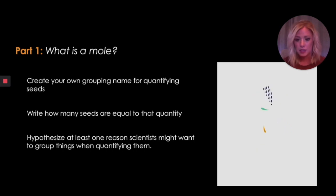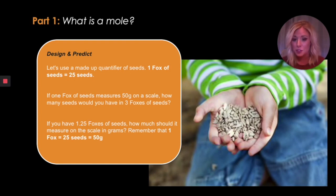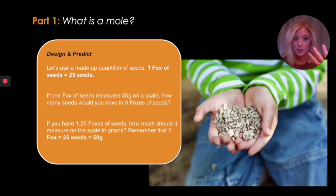I also want you to hypothesize at least one reason scientists might want to group things when they quantify them. Here's my example: my last name is Fox, so I said one fox of seeds is equal to 25 seeds, and one fox weighs 50 grams on a scale. How many seeds would you have in three foxes? I know 25 seeds equals one fox, so three foxes would be 25 times 3, giving us 75 seeds.